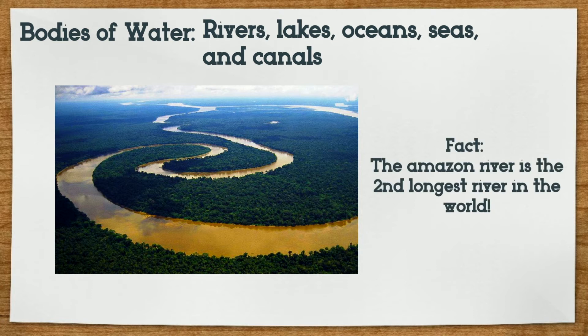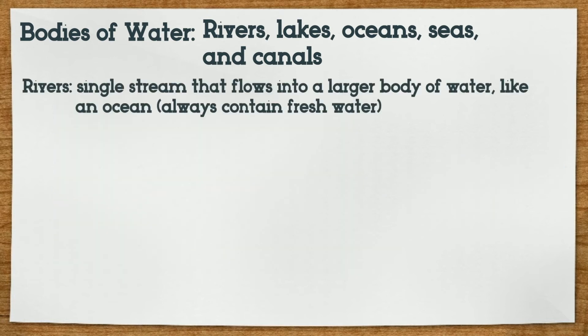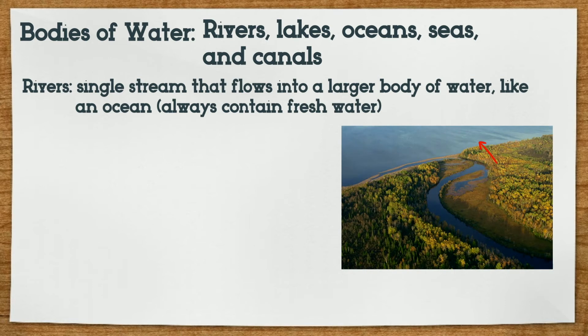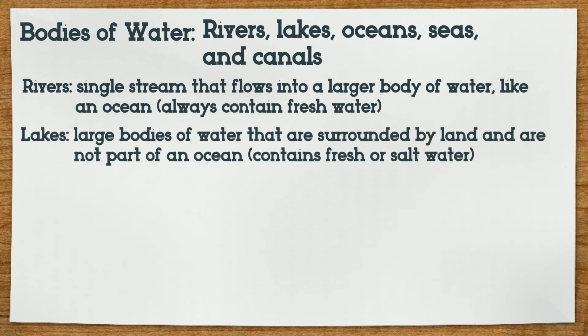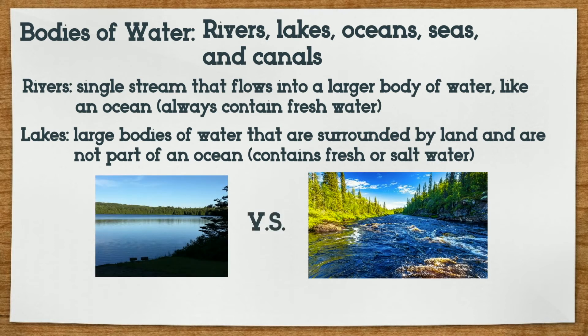The one we saw at the Amazon is a river, and it is the second largest river in the world. Isn't that cool? Rivers are a single stream that flows into a larger body of water, like an ocean, and they always contain fresh water. Lakes are different from rivers because they are large bodies of water that are surrounded by land and are not part of the ocean. They contain fresh or salt water. To distinguish rivers and lakes, you could look at a flowing stream of water — if it's moving, those are rivers, but if it's not moving, it's a lake.